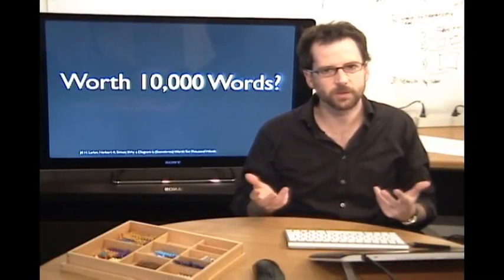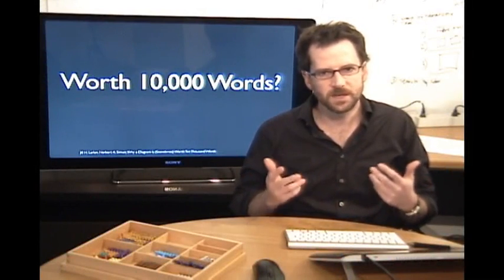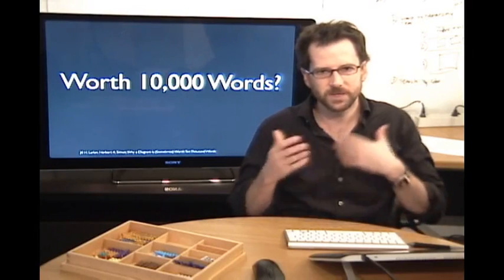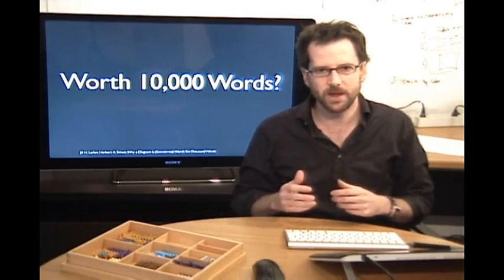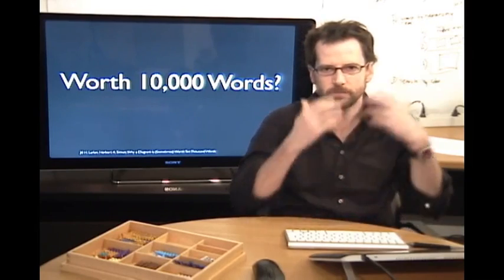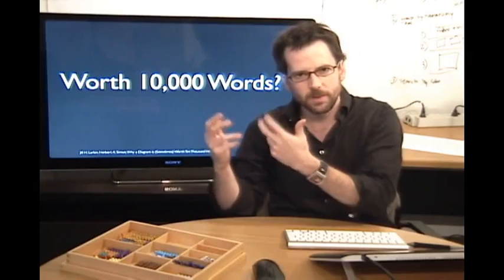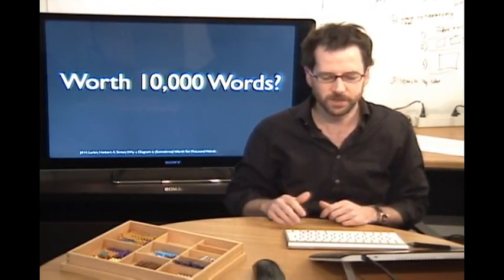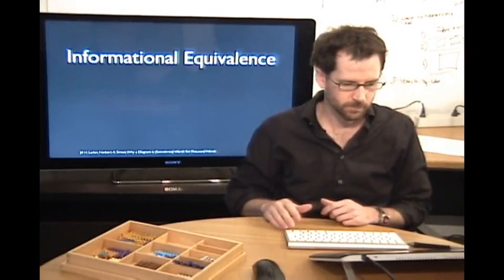We've all heard the saying that a picture is worth 10,000 words. This idea of worth is interesting because it implies some kind of interchangeability — there's some rate at which you can convert one representation into another. One type of interchangeability is informational equivalence: two representations are informationally equivalent if all of the information present in one can also be inferred from the other.